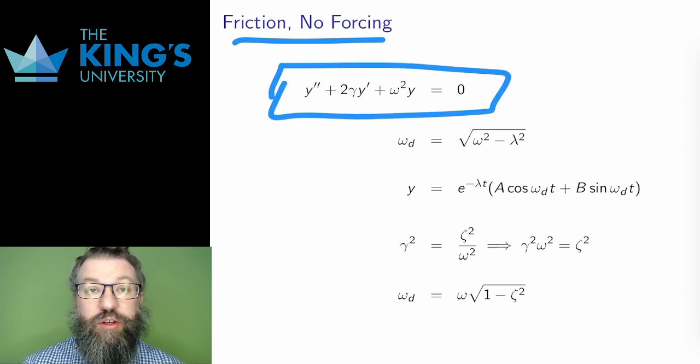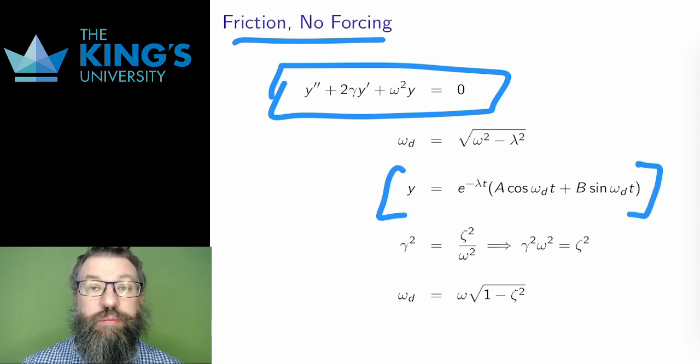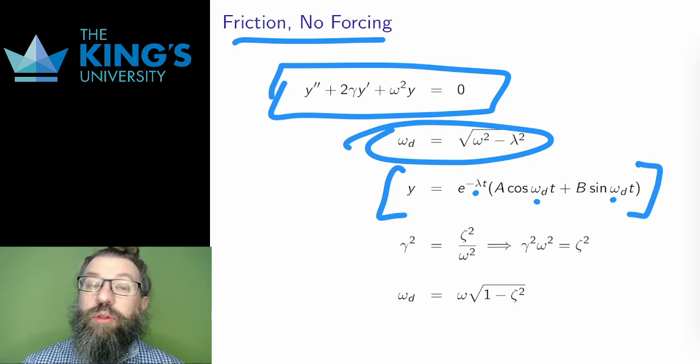Here is the differential equation, and this is solved by decaying oscillations. Remember, all through this video, I am assuming an underdamped situation. Lambda is the decay coefficient, and the frequency is the square root of the natural frequency squared minus the damping coefficient squared. I'll call this omega d, the damped frequency. This is what the system does without forcing but with friction.